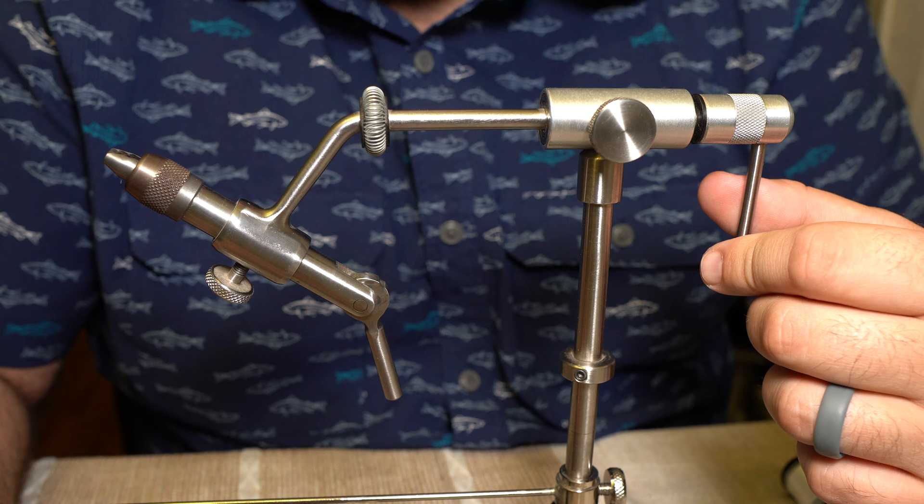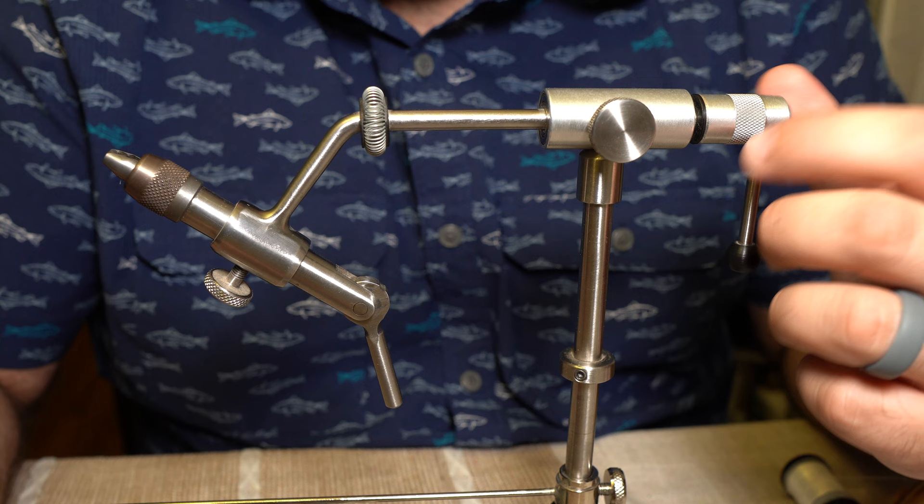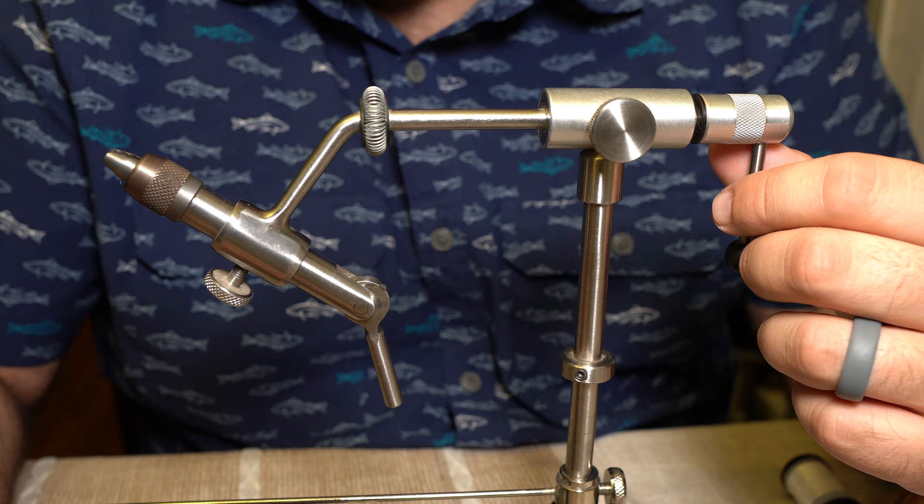I was in the market for a new rotary vise, and you've got a couple options. You've got the Ranzetti vises. Peak is a newer manufacturer, but they make very nice vises. Apart from those two, Dyna King is one of the only others making rotary vises that have any real history.